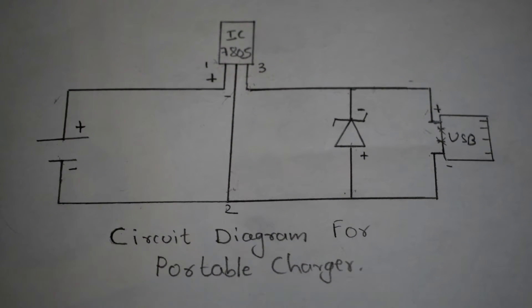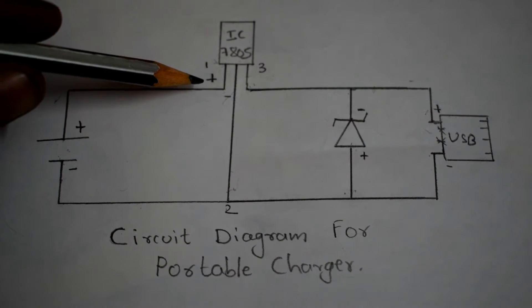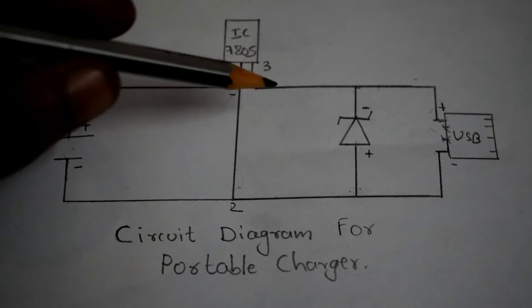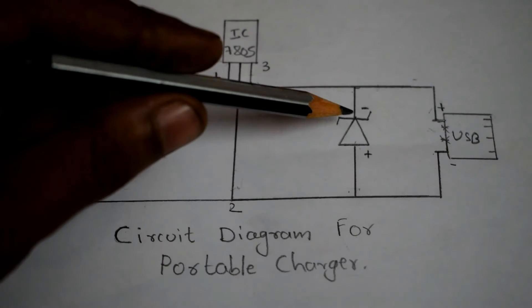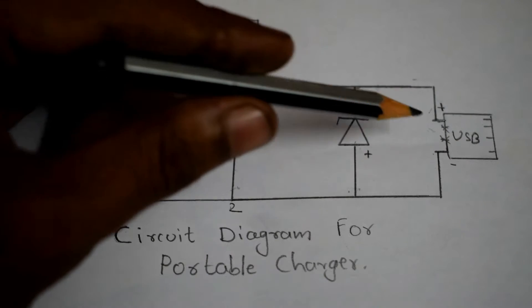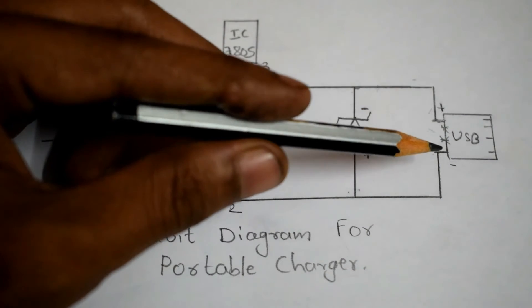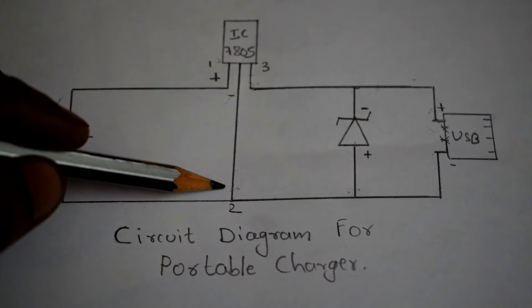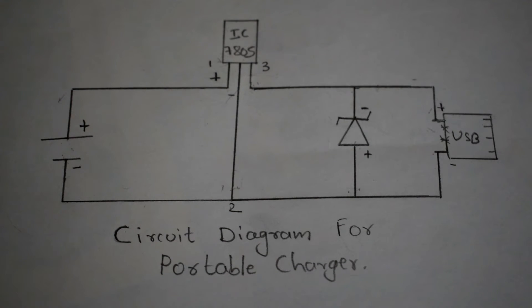As you can see, the positive of the battery is connected to the IC's first pin, and the second pin is connected to the negative of the battery. The third pin is connected to the negative of the diode. The negative of the diode is connected to the positive of the USB. The negative of the USB is connected to the positive of the diode, and the positive of the diode is connected to the second pin which is connected to negative.